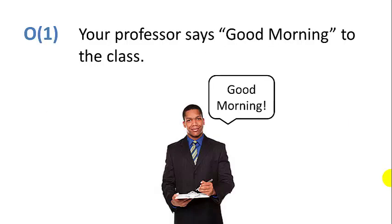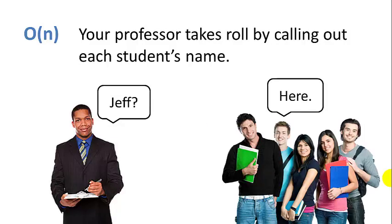Now if your professor greets the class, he says good morning class. That is a big O of one event because it's a single event. Now the professor calls roll. He calls out each student's name in the class and each student answers here. That's big O of n. Because there are n students in the class and he has to call out n names.